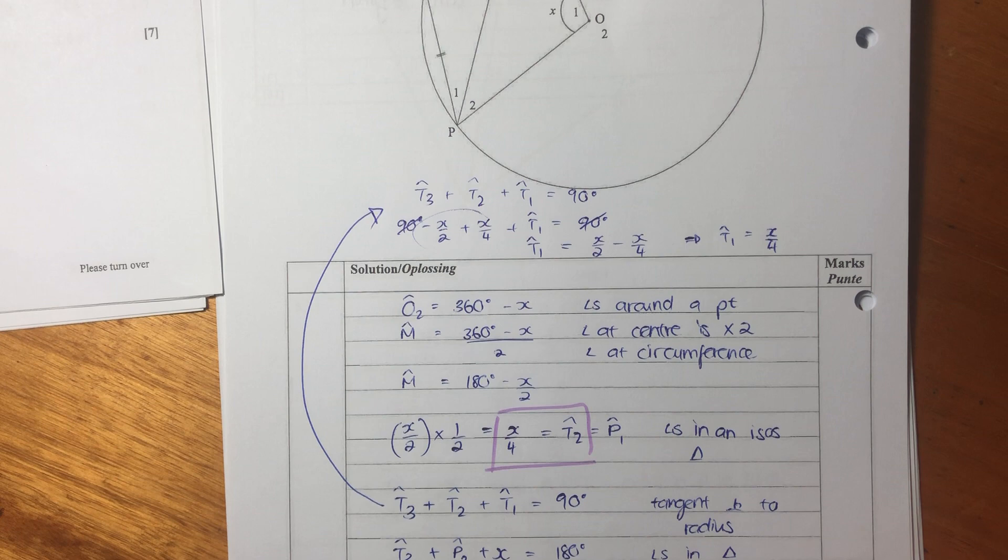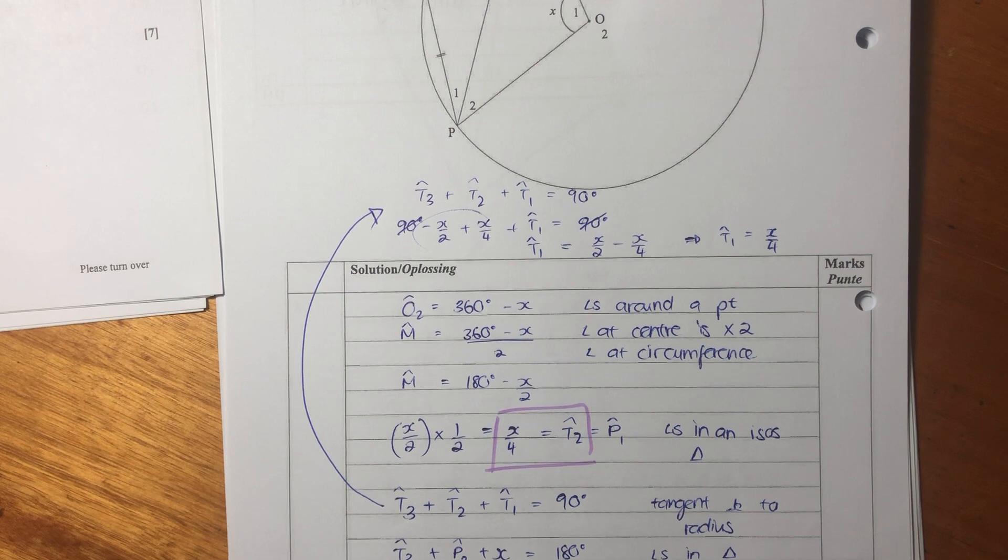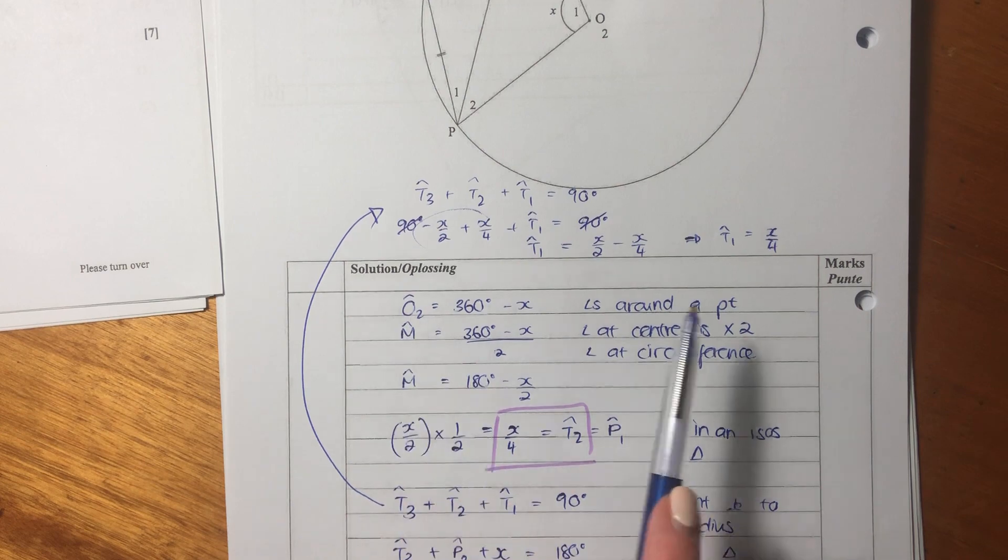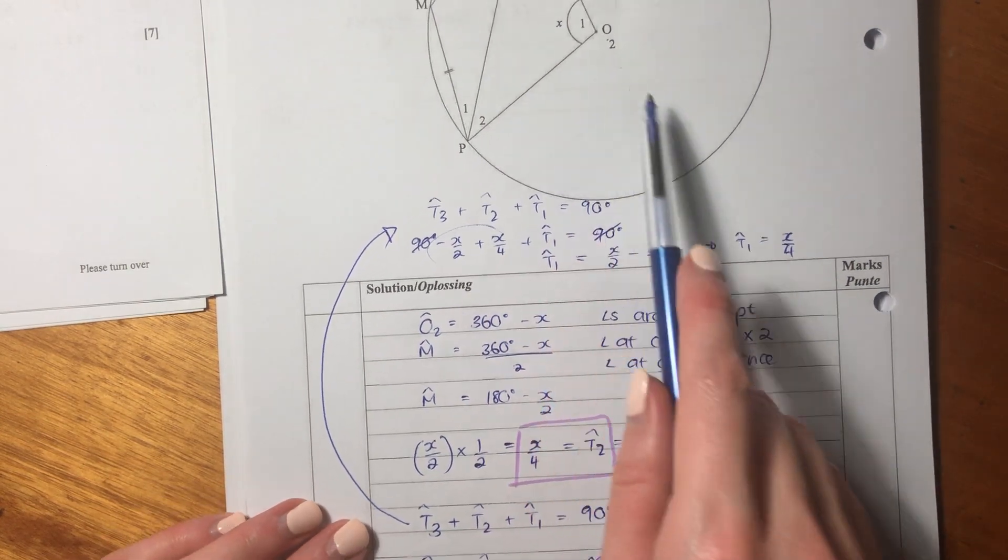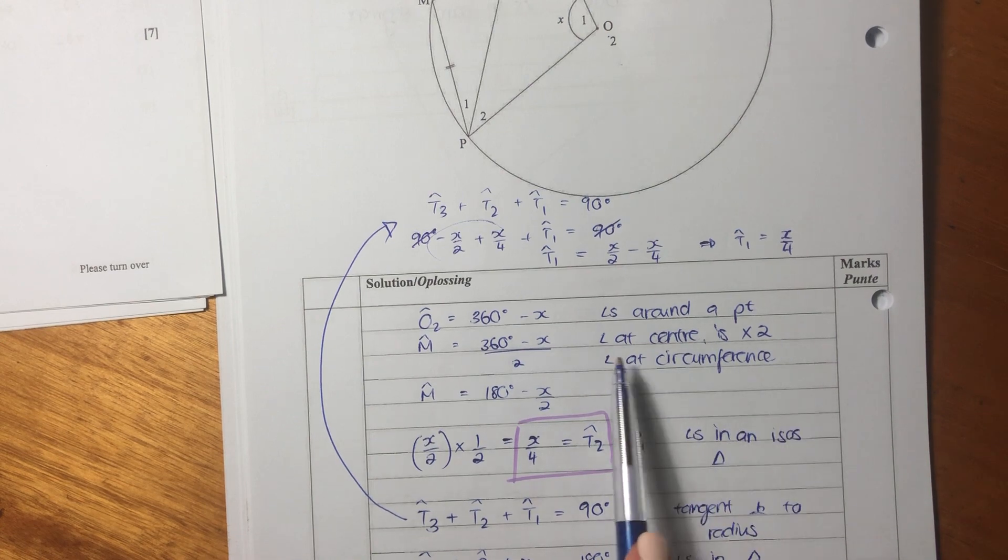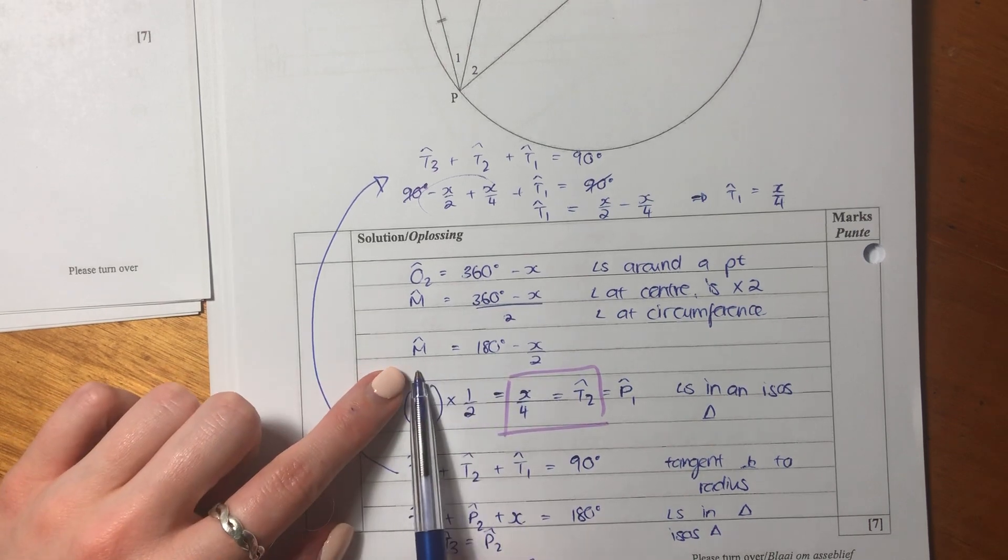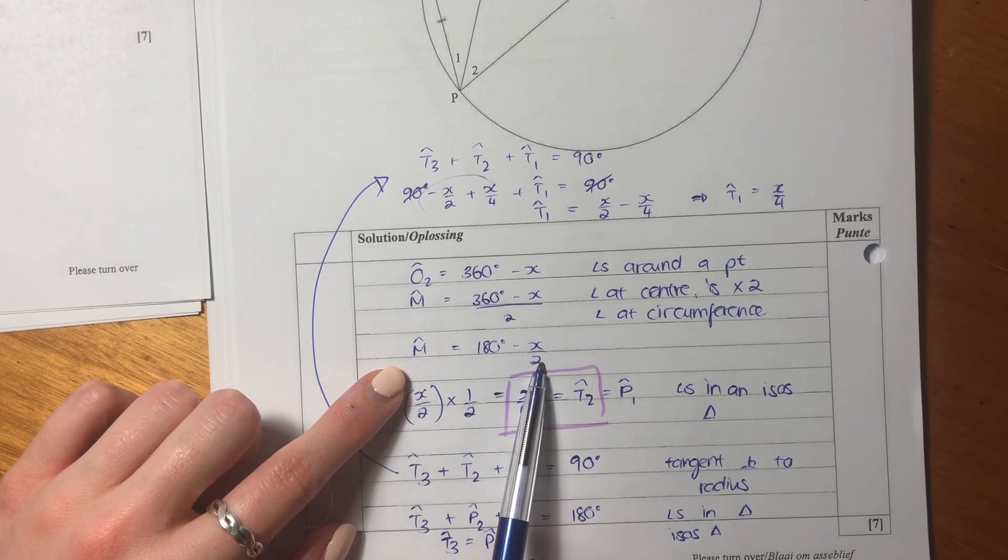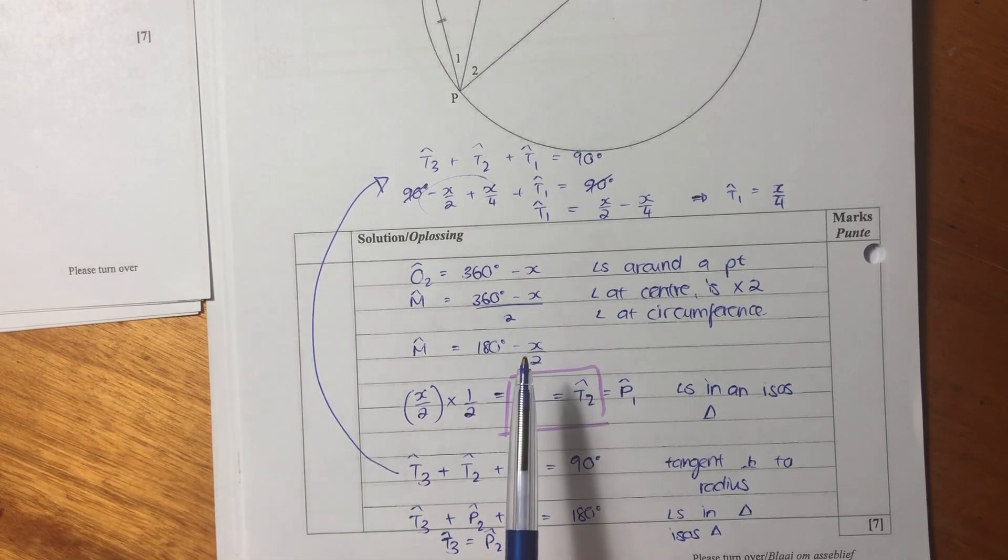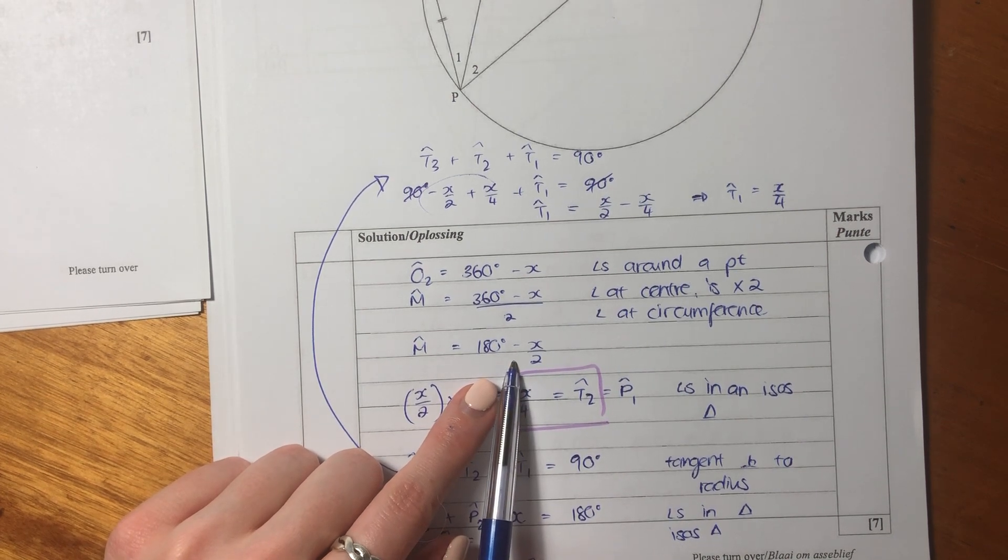So there's many ways you can go about this. This is quite a lengthy way that I went about it. There are other ways you can do it, but I just wanted to make it sort of as intuitive as possible. So let's just quickly run through what we went through. So we said angles around a point. So you get O2. Then we said, okay, angle at the center is two times the angle of the circumference. So M over here equals half of that. So M equals 180 minus X over 2.